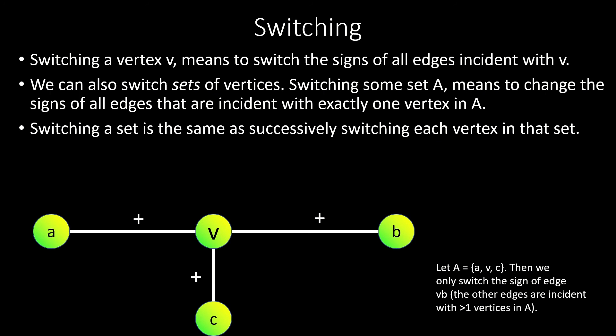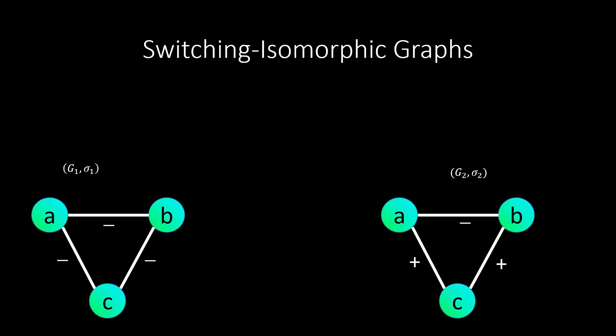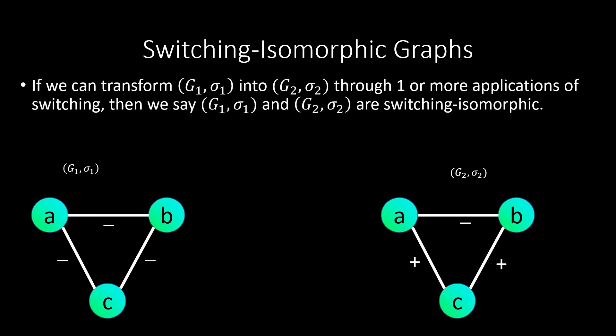The result of switching a set of vertices is the same as consecutively applying the switch operation to each individual vertex in that set, because edges with both endpoints in the set get negated twice — returning to their original sign — while edges with only one endpoint in the set are negated once. So we have two equivalent ways to think about switching a set of vertices. If, through applications of only the switch operation, we can transform one signed graph into another, then we say those signed graphs are switching isomorphic. These two graphs in this example are switching isomorphic.